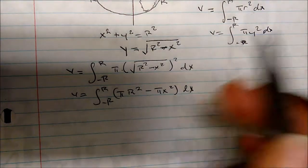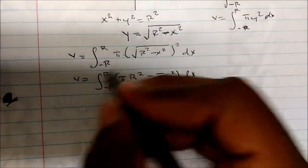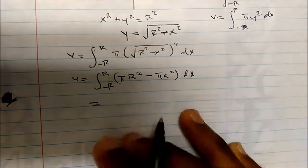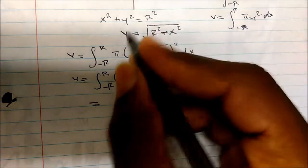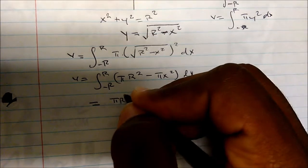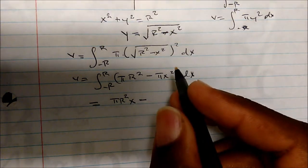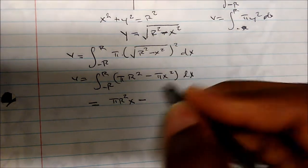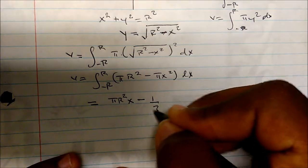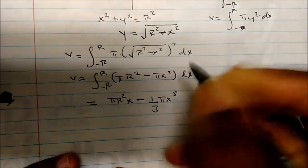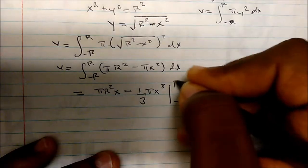Now I can go ahead and take the integral of this. The integral of π r squared is π r squared x, minus the integral of π x squared, which is one-third π x cubed. This will all be evaluated from negative r to r.